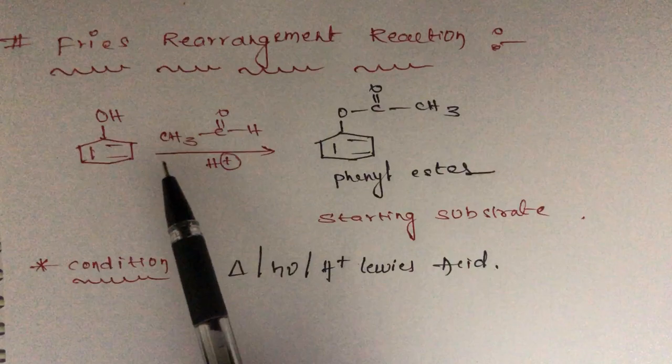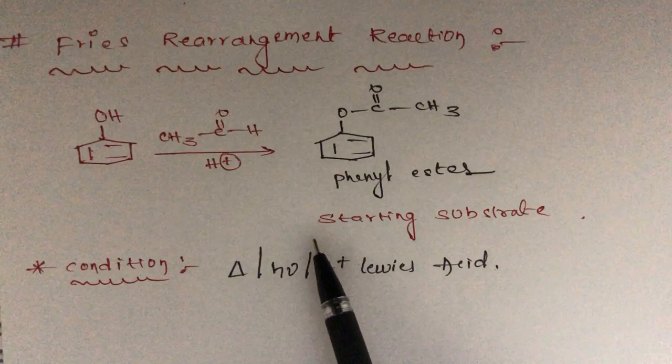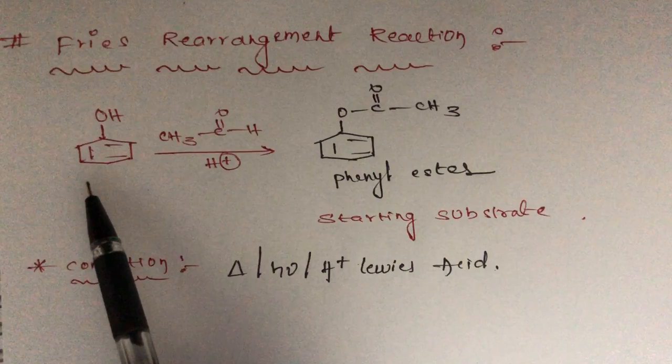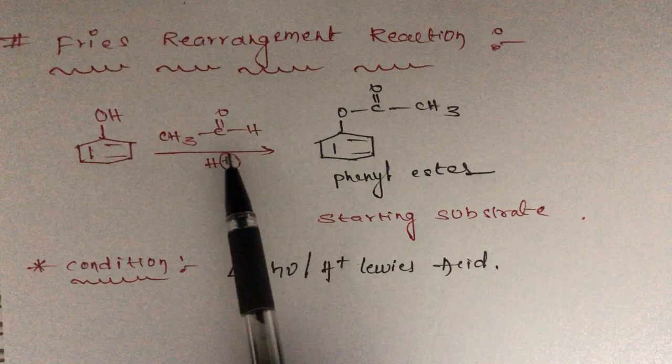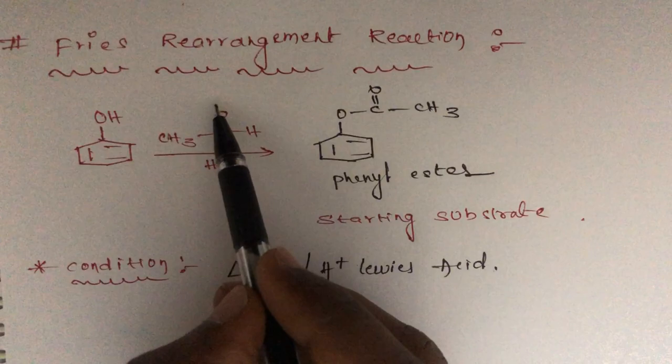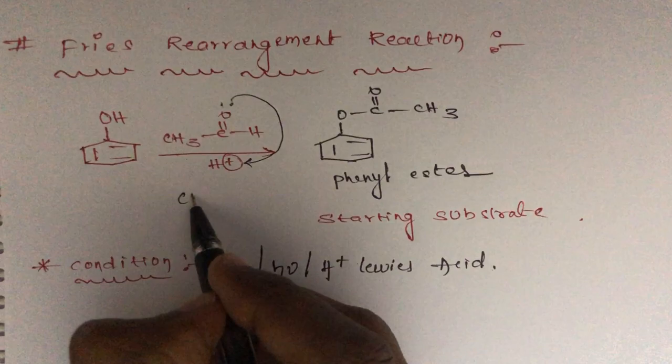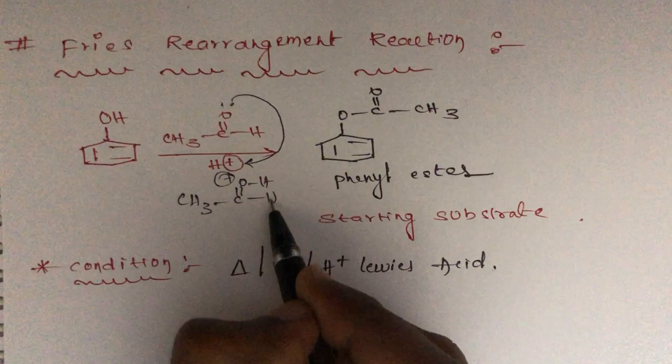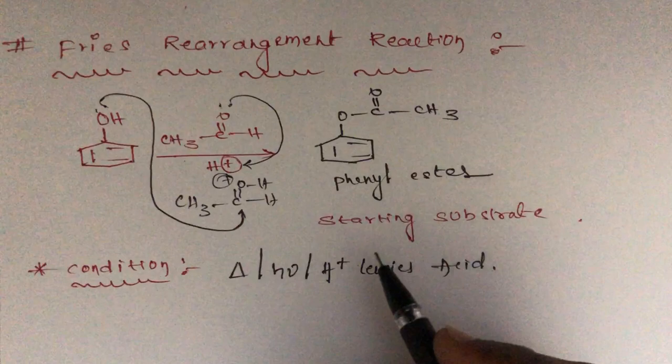This is one type of named reactions. Here we are preparing a starting substrate. We are going to take phenol and it is treated with a carbonyl compound containing aldehydes in acidic media, then we can get phenyl esters. This lone pair of electrons will take the proton, giving CH3, C double bond O with positive charge, and finally we get phenyl esters.